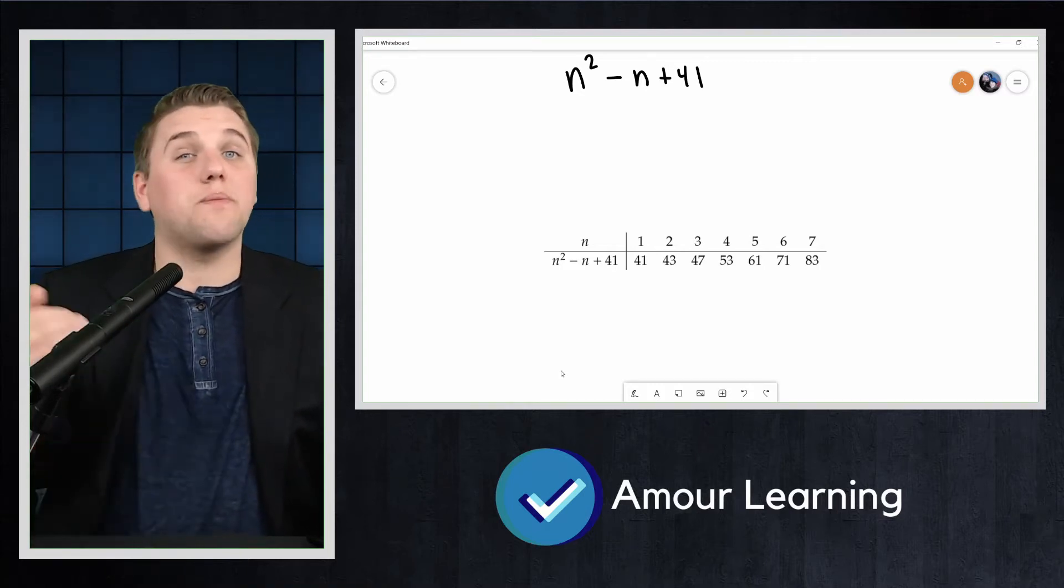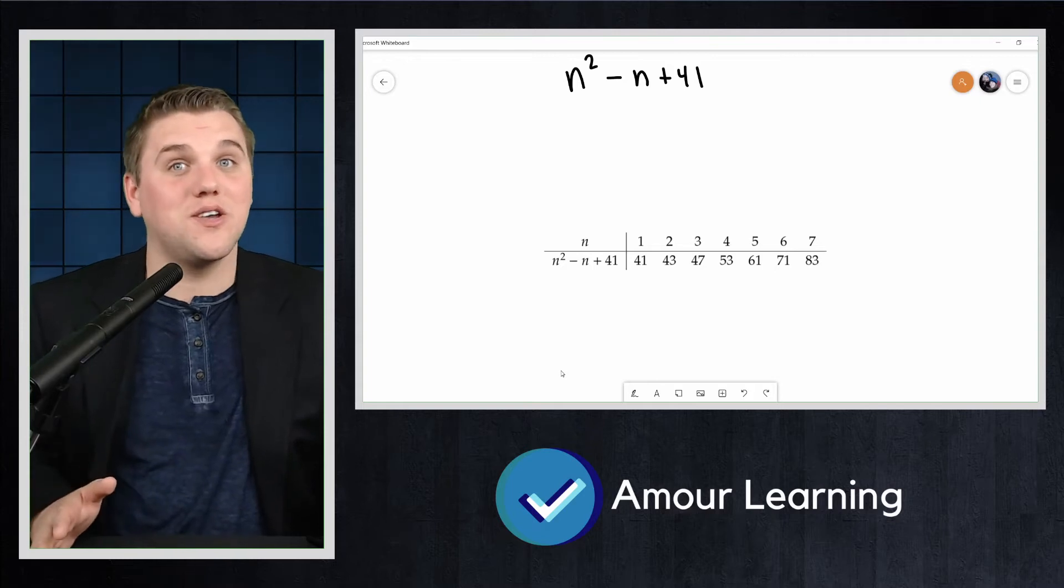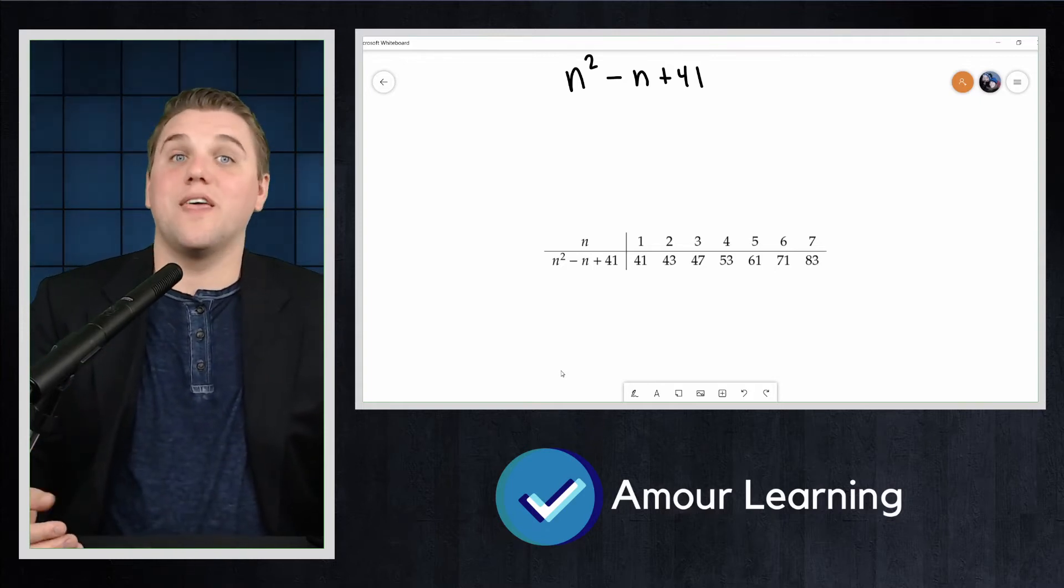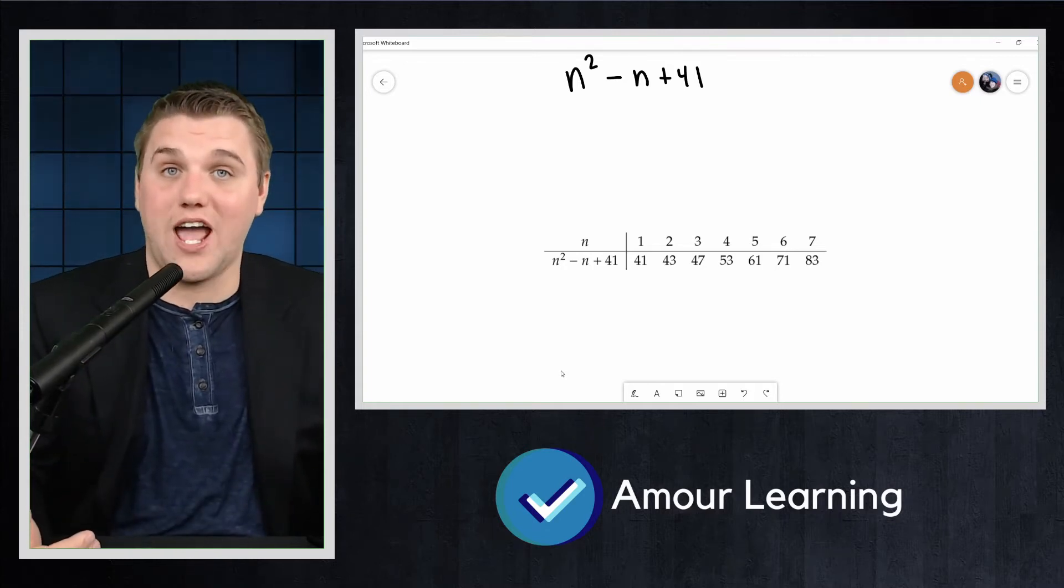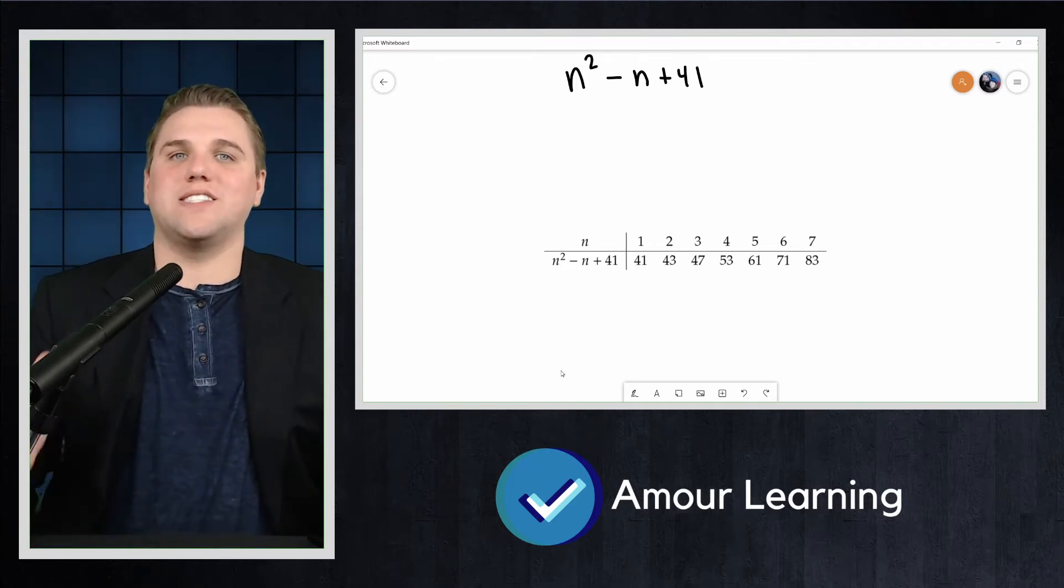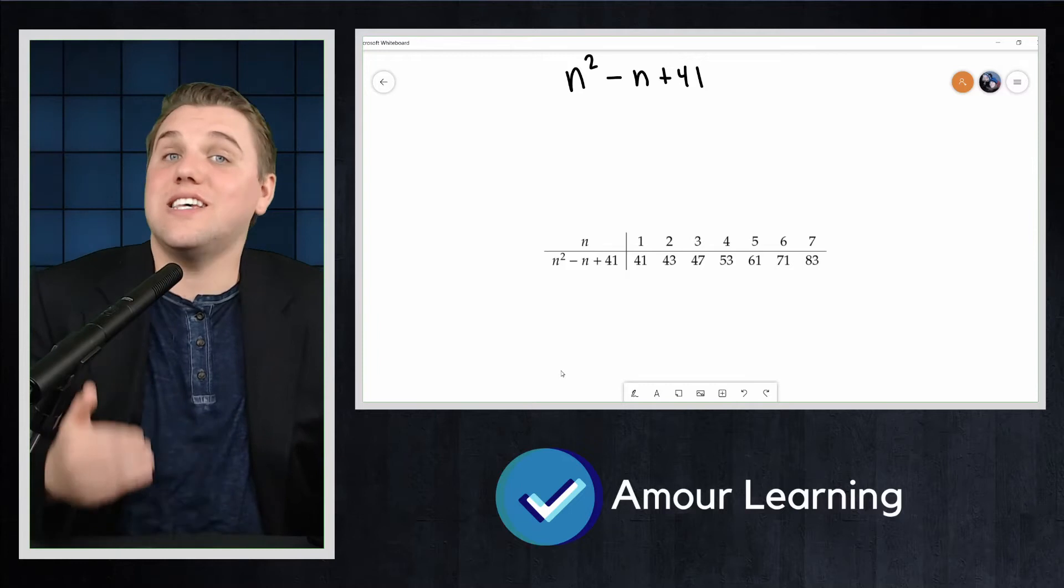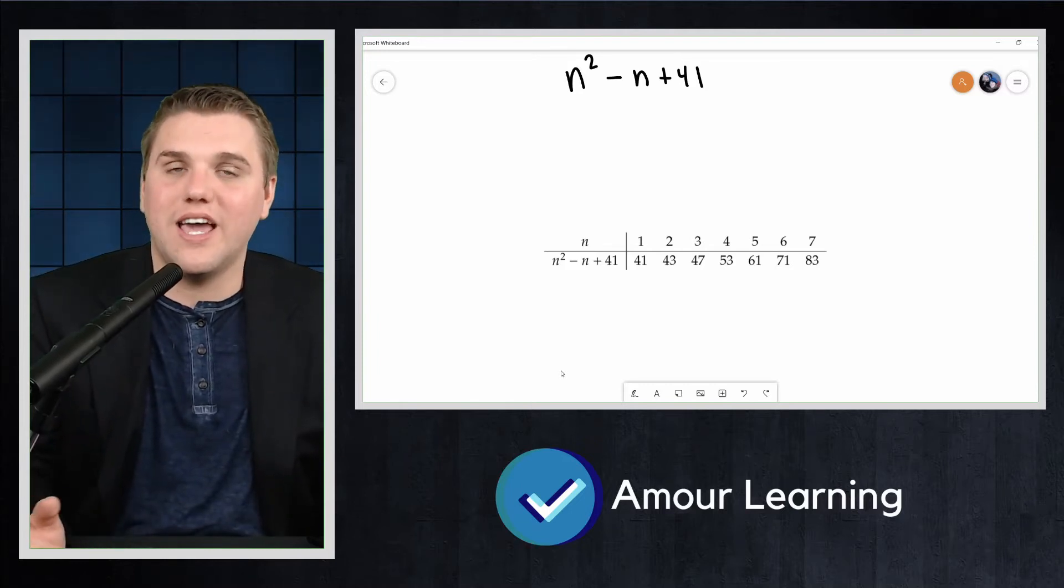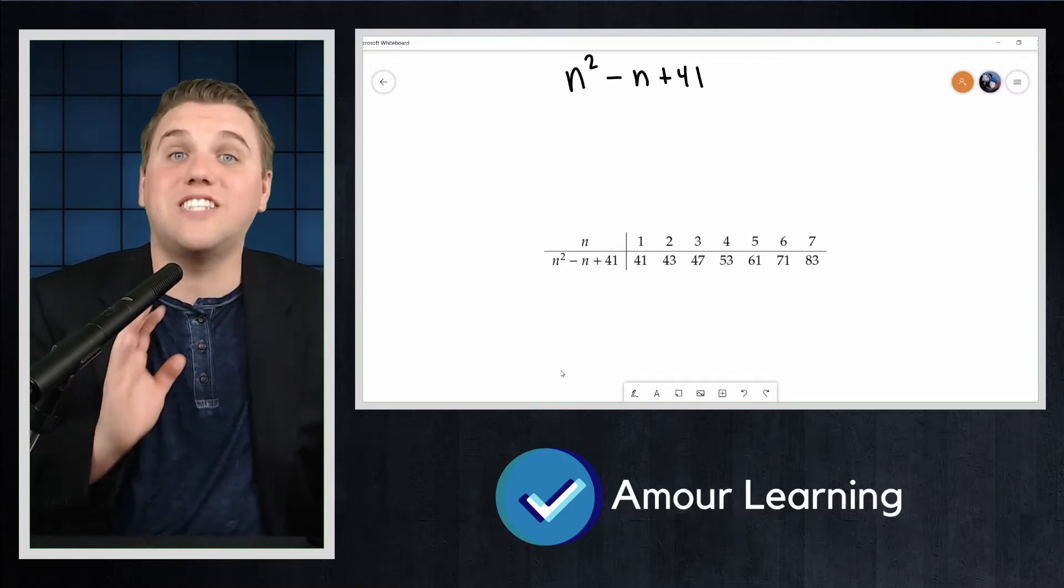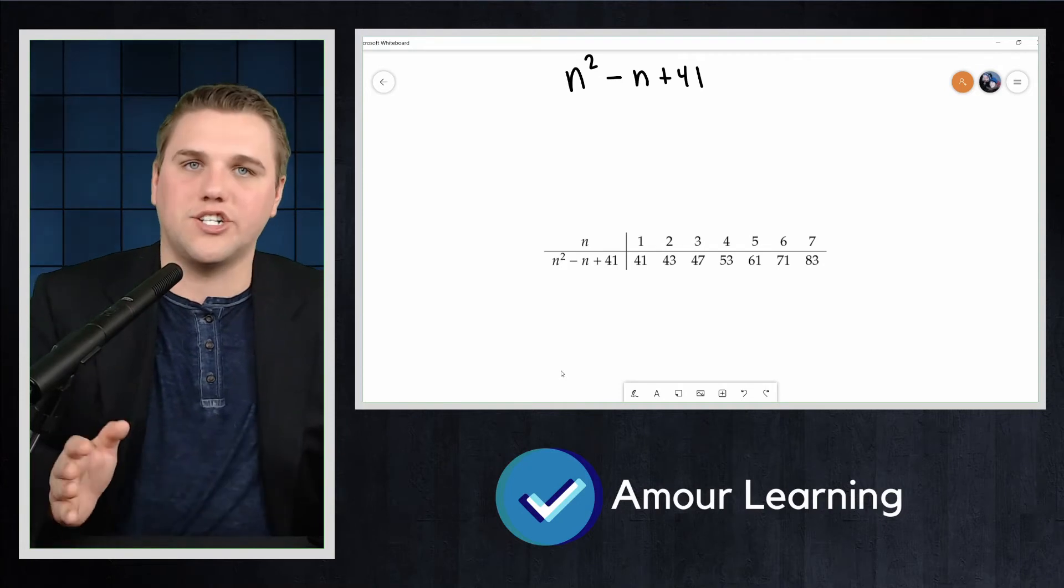In fact, we can prove this conjecture is false by proving its negation. There is a positive integer n such that n squared minus n plus 41 is not prime. Since this is an existential statement, it suffices to show that there does indeed exist such a number.